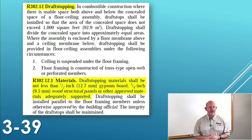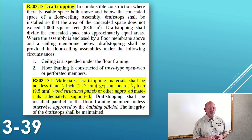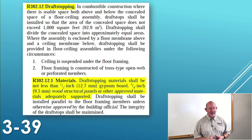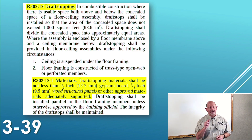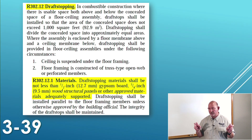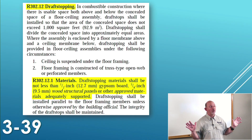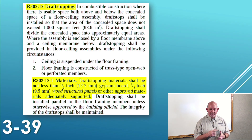R302.12.1 materials: draft stopping materials shall be not less than a half-inch gypsum board, three-eighths-inch wood structural panel, or other approved material adequately supported. That wood structural panel is also known as plywood. You won't see the term OSB or plywood in the code — anytime they refer to OSB or plywood, they'll always use 'wood structural panel.' That is plywood, that is OSB.